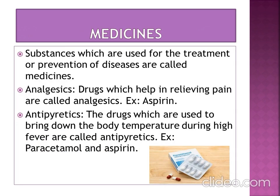Medicines: Substances which are used for the treatment or prevention of diseases are called medicines. Analgesics are drugs which help in relieving pain — for example, aspirin. Antipyretics are drugs which are used to bring down the body temperature during high fever — for example, paracetamol and aspirin.